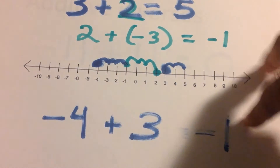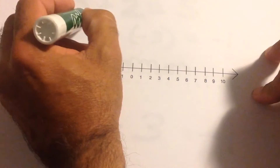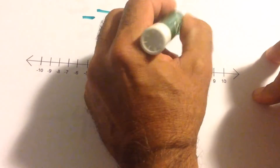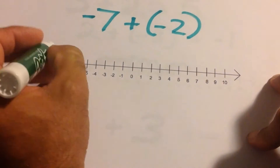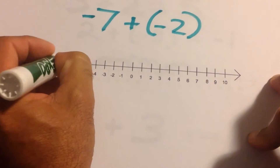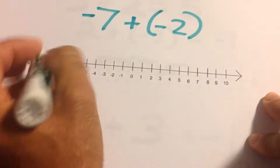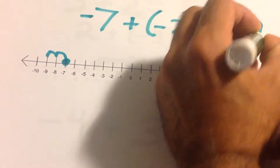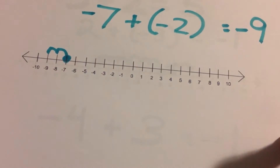Let's try negative seven plus negative two. Start at negative seven on the number line. Negative two means go to the left — one, two — and there it is: negative nine.